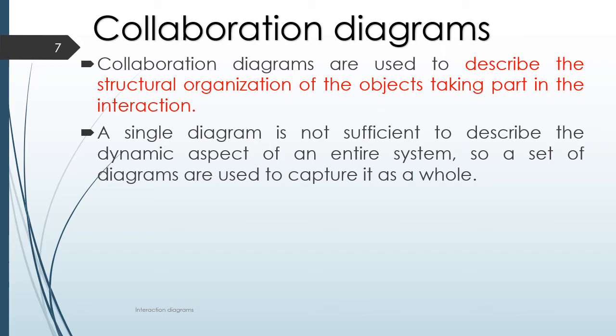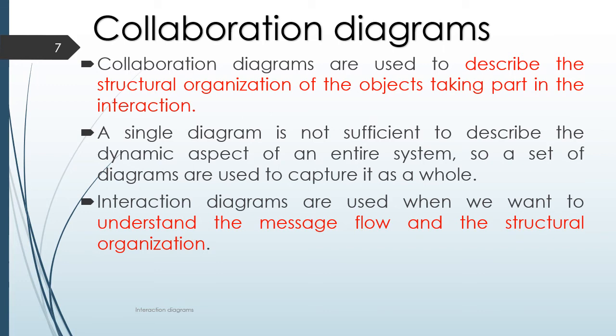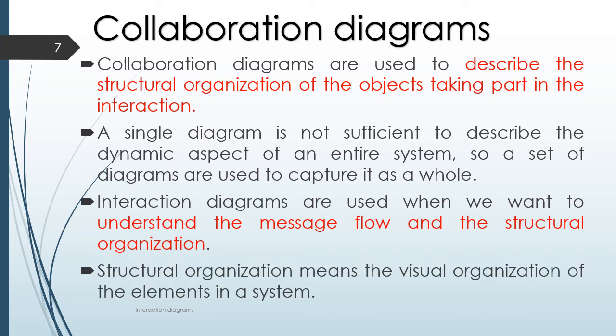So a set of diagrams are used to capture it as a whole. Interaction diagrams are used when we want to understand the message flow and structural organization. In a collaboration diagram, the method call sequence is indicated by a numbering sequence, and the number indicates how the methods are called one after another.